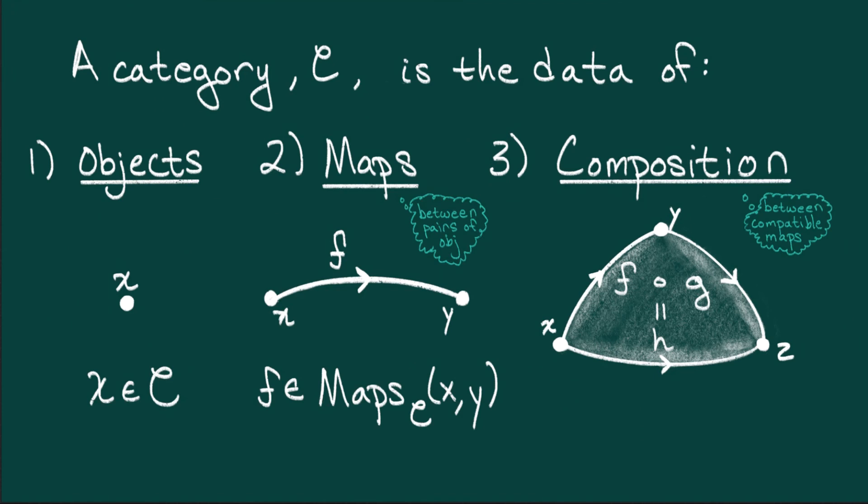In summary, if you want a category, you need to first specify three pieces of data. A collection of objects, maps between objects, and a procedure for composing pairs of compatible maps.